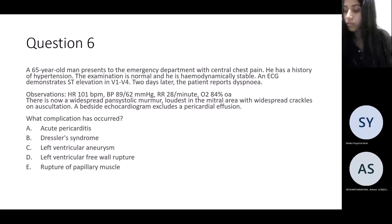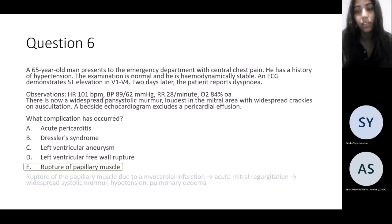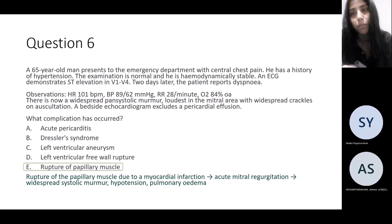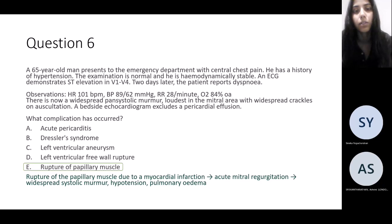The answer is rupture of the papillary muscle. When the papillary muscle ruptures post-MI, it causes acute mitral regurgitation, which produces the murmur. Acute mitral regurgitation results in flash pulmonary edema — that's why they have widespread bilateral crackles and are also hypotensive. Apologies, this is quite a busy slide.